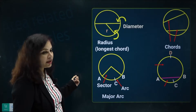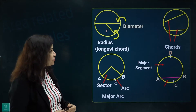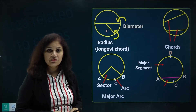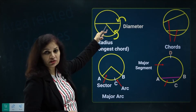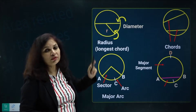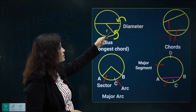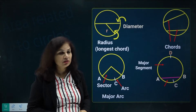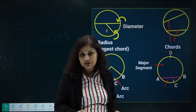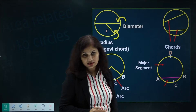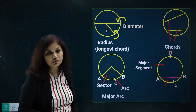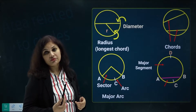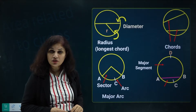Looking at the first diagram, the diameter is a straight line passing through the center of the circle and connecting two endpoints. It is the longest chord of the circle. What is the difference between a chord and the diameter? All chords except the diameter do not pass through the center. The diameter is the only chord which passes through the center. A chord is a straight line segment connecting two endpoints of a circle, so a diameter is also a chord.